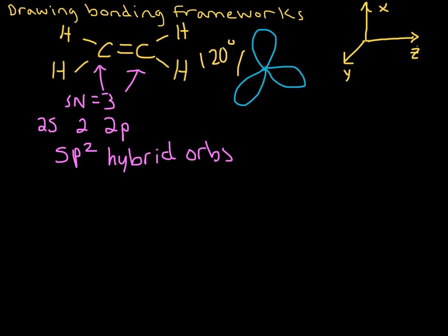So if we want to draw the sigma bonding framework first, then what we need to do is start by drawing the hybrid orbitals for one of the carbons, and I'm going to set it up so that it can bond with a neighbor. You can see that my geometry looks kind of like that Lewis structure that I drew. So there's one of the carbons.